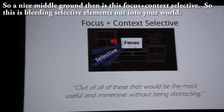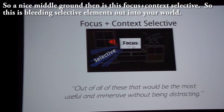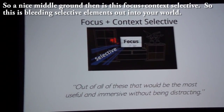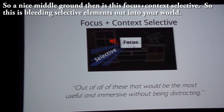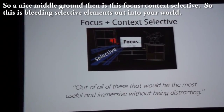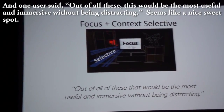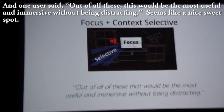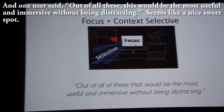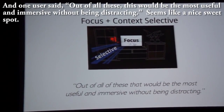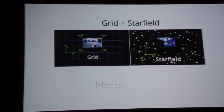A nice middle ground is the focus plus context selective illusion — bleeding selective elements out into your world. One user said, out of all these, this would be the most useful and immersive without being distracting. It seems like a nice sweet spot.